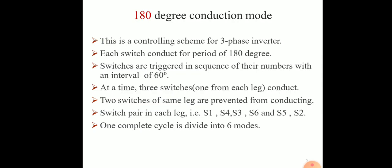Switches are triggered in sequence of their number with an interval of 60 degrees. T1 conducts, then T2 is fired after 60 degrees of T1, T3 fired after 60 degrees of T2, T4 fired after 60 degrees of T3, T5 fired after 60 degrees of T4, and T6 fired after 60 degrees of T5. At the same time, 3 switches conduct — 1 from the positive group and 2 from the negative group, or 2 from the positive group and 1 from the negative group. Two switches of the same leg are prevented from conducting simultaneously because that would produce a short circuit across the supply. Switch pairs in each leg are S1 and S4, S3 and S6, S5 and S2.